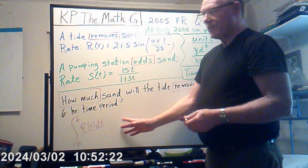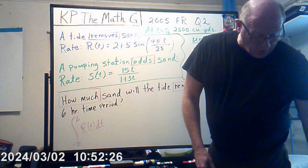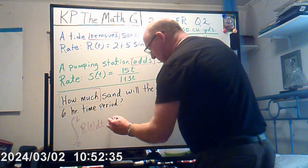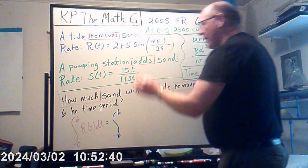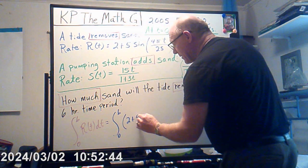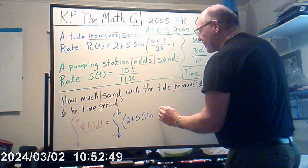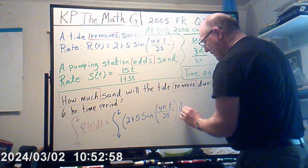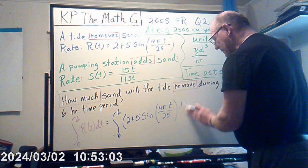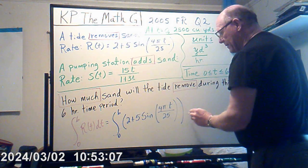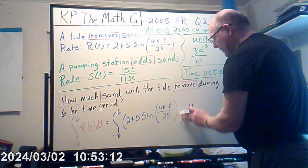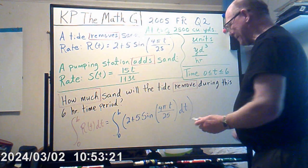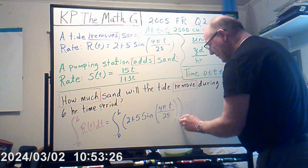To be more precise, that integral is from 0 to 6 of the quantity 2 plus 5 sine of 4πt over 25, dt. You can write DT on the outside or inside the parentheses — it doesn't really matter. This is the function we're working with.